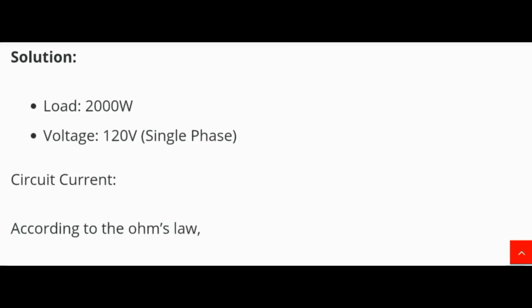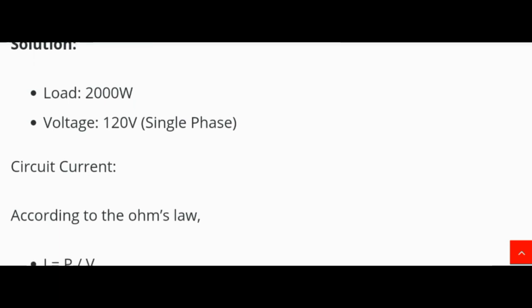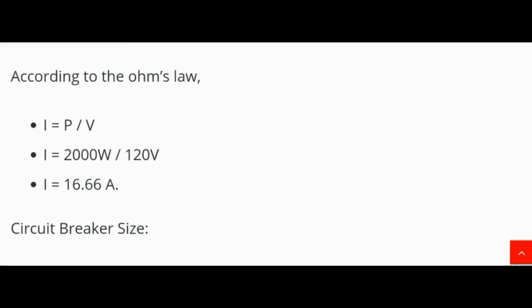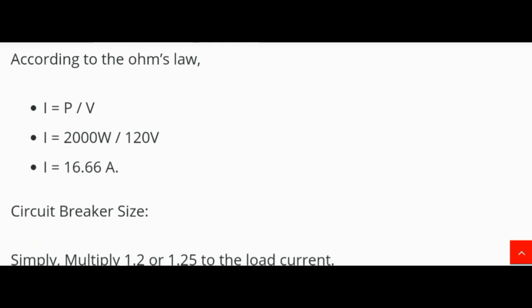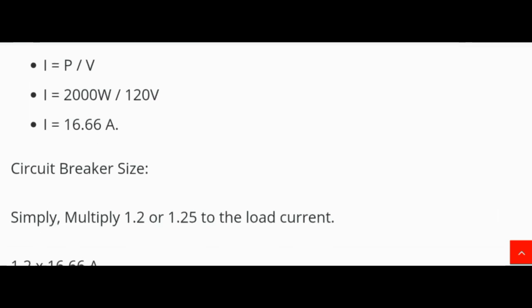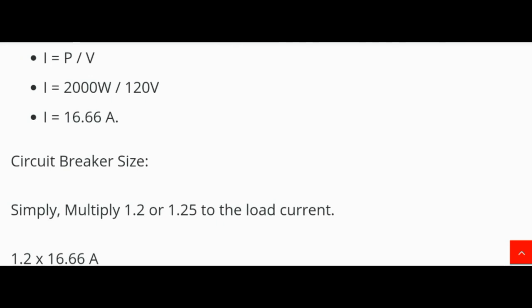Example 2: What is the appropriate size of circuit breaker for a 2000 watt, single phase, 120 volt supply? Solution: Load = 2000 W, Voltage = 120 V (single phase). Using Ohm's law: I = P / V = 2000 W / 120 V = 16.66 ampere.